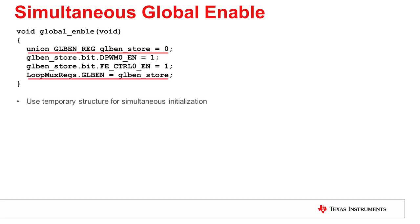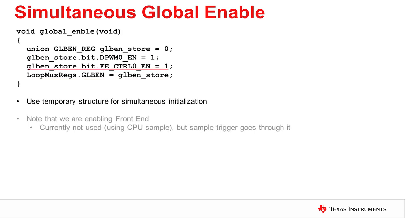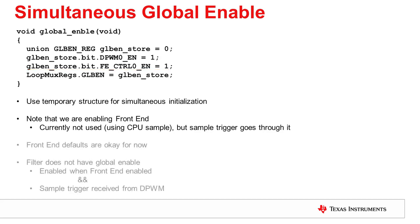We want to enable DPWM0 and front end 0 simultaneously. We can do this using a temporary structure. Note that we are enabling front end 0 — as mentioned, we are not using it, but the sample trigger is routed through it. The defaults for the front end are OK for now. Also note that the filter does not have a global enable bit in the global enable register. It is enabled when the front end that is driving it is enabled and a sample trigger is received from the DPWM.